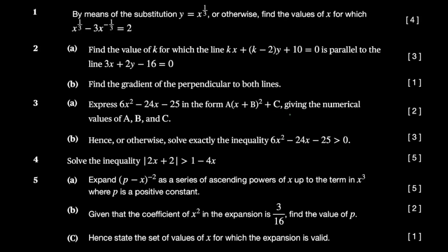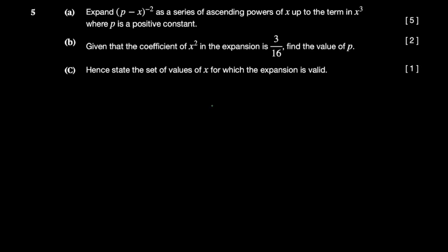Hey guys, this is Abit Yuba. In this video we're going to do Question 5 from the June 2020 Paper 1 A-Level Maths paper. I'm going to wipe everything out and go straight to Question 5. You're asked to expand (p - x) to the power negative two as a series of ascending powers of x up to x cubed, where p is a positive constant.